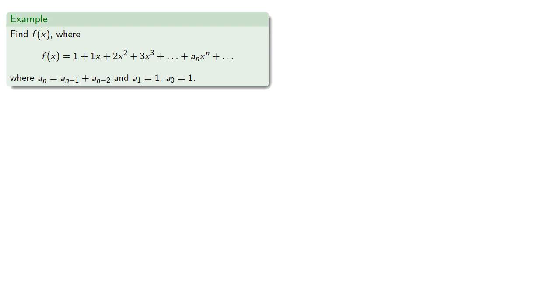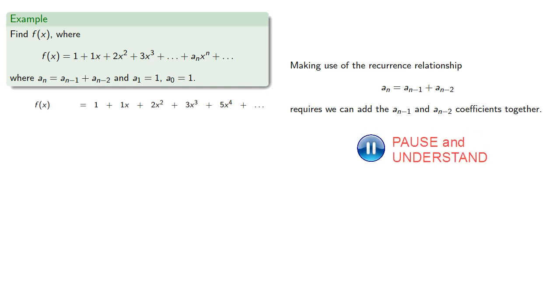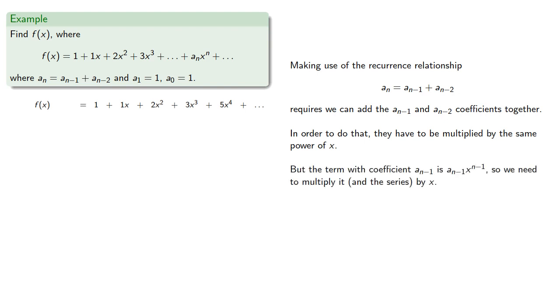Our goal is to get some sort of equation in f(x). We know f(x) is equal to our power series. Making use of the recurrence relationship requires we can add the a_{n-1} and a_{n-2} coefficients together. In order to do that, they have to be multiplied by the same power of x. But the term with coefficient a_{n-1} is a_{n-1}x to power n-1, so we need to multiply it and the series by x.